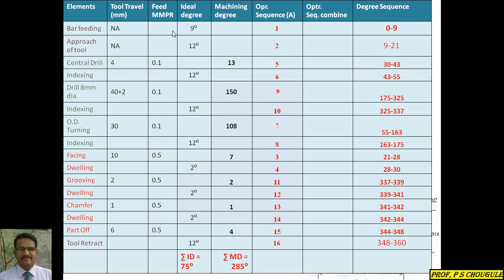To find the degree sequence for cam drawing: bar feeding runs from 0 to 9 degrees. Approach of tool: 9 to 21 degrees (9 + 12 = 21). Facing operation: 21 to 28 degrees (21 + 7 = 28). Dwelling: 28 to 30 degrees (28 + 2 = 30). By this method, you complete the entire degree sequence for each operation.